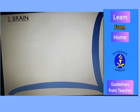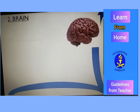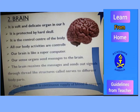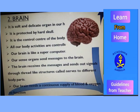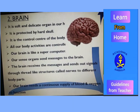The next organ we are going to study is the brain. Where is the brain present? It is present inside our head. It is a soft and delicate organ which is protected by the skull. It controls all the activities of our body — whether writing, talking, or anything else. All activities are controlled by the brain, so it acts like a super computer.